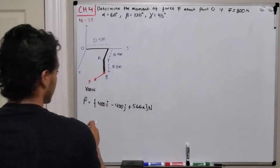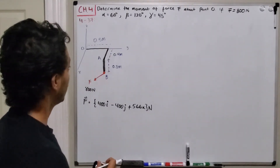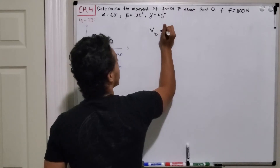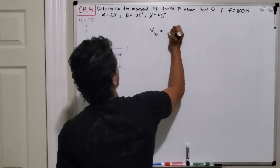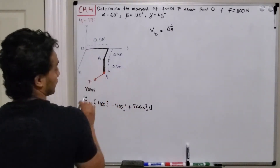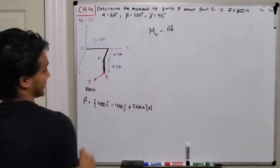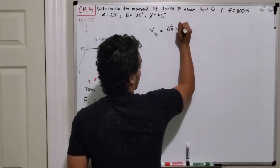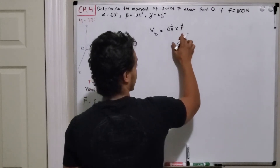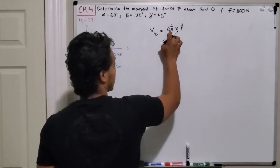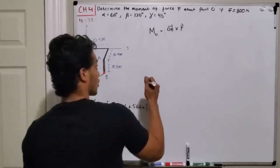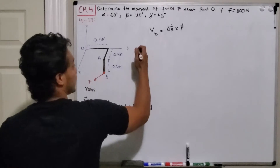All three components are now known. If we want to find the moment about point O, the moment is going to be equal to the position vector OB cross product with the force F. In scalar form we do distance times force, but in vector form we need to multiply vector OB cross product with the force vector.